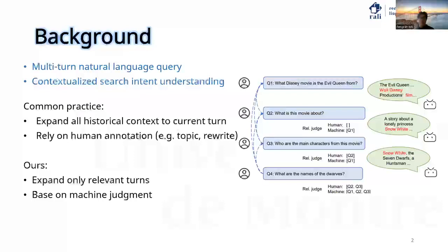The figure on the right gives an example of a conversational search section. Two characteristics of the task are multi-term natural language query and required contextualized search understanding. The common practice is to expand all historical context to current terms but relies on human annotations such as topic information or rewrite. Different from them, our method expands only relevant terms and is based on machine judgment.